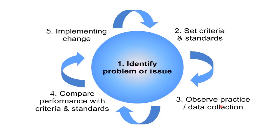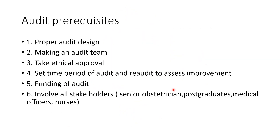Then you have to compare performance with the criteria and standards that were set in step two. You compare your collected data with those standards, and then implement the change. Whatever flaws you find in your data, you implement change accordingly, in line with national standards. This is the audit cycle — it has five steps.